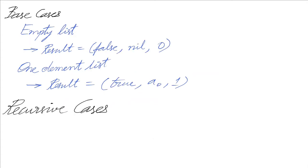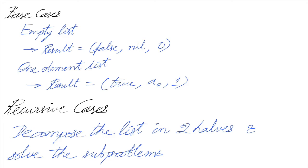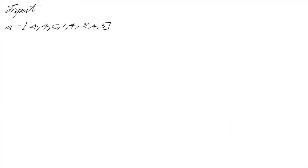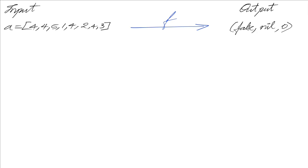What are the recursive cases? We decompose the list into two halves and solve the sub-problems. Let's look at the recursion diagram. The input consists of a given list. The output in this case is false, nil, and zero because four occurs only four times and the size of the list is eight. If it was five, we would return true, five, and five as the tuple. In the reduction step, we split this list A into two sublists.